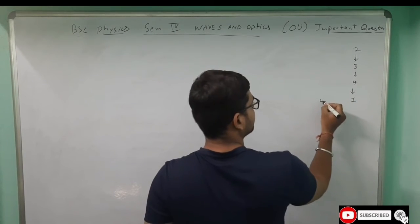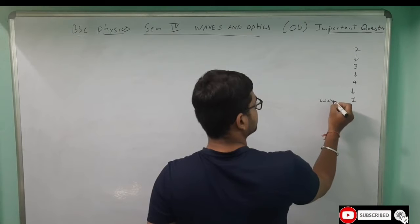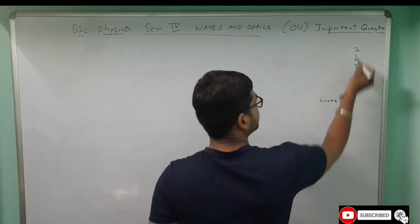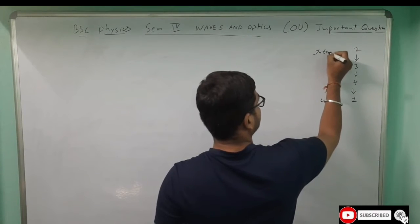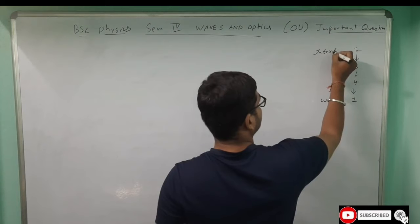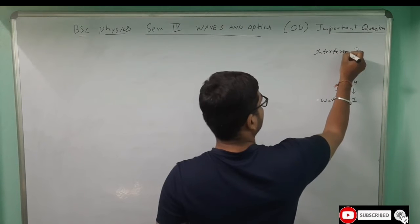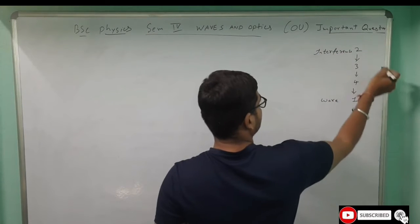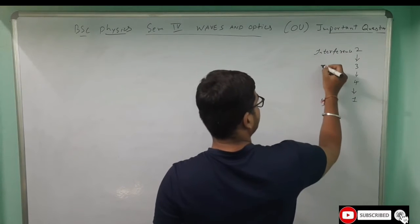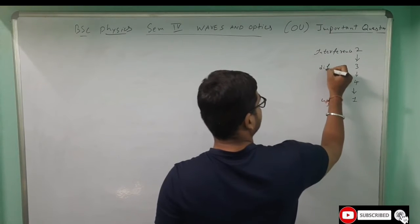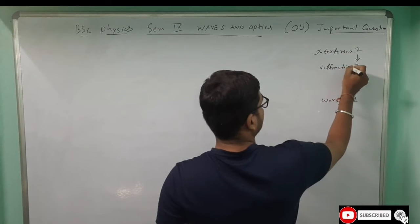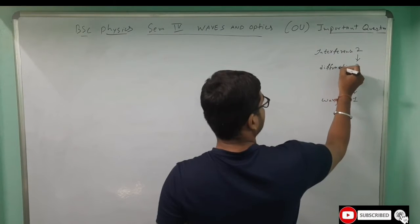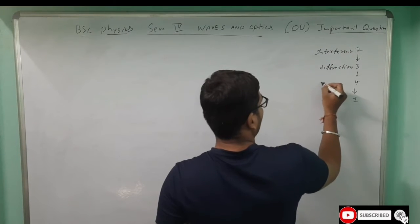The unit names are: unit one is Waves, unit two is Interference, unit three is Diffraction, and unit four is Polarization.